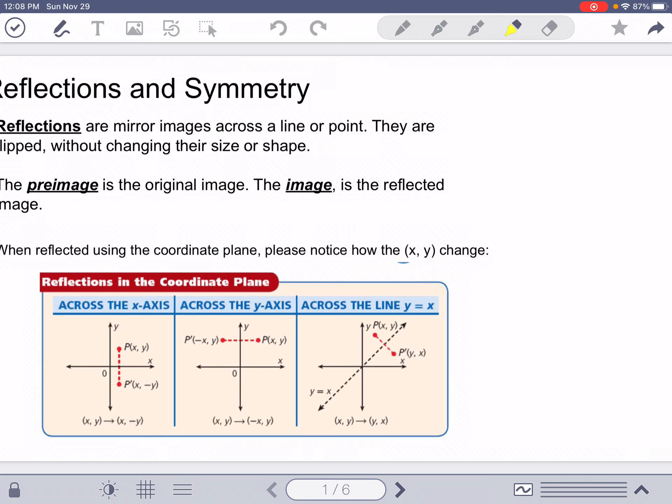Down here at the bottom, the pre-image would be this image right here. That would be that coordinate, x, y. The image is the one that we changed, and that one's down here in pink. Notice that there's this little quotation or apostrophe mark there.